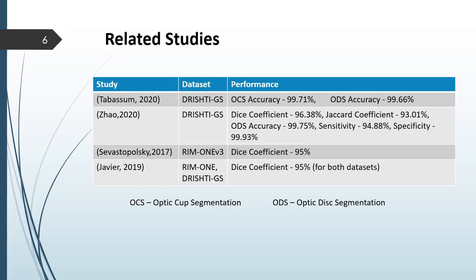Their results are shown using the metrics namely accuracy, Dice coefficient, Jaccard coefficient, sensitivity and specificity. From these studies, Zhao and others obtained 99.75% accuracy for optic cup segmentation.